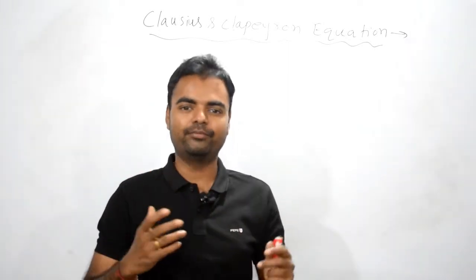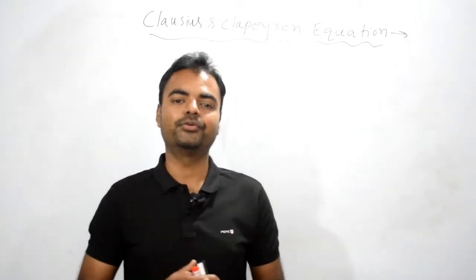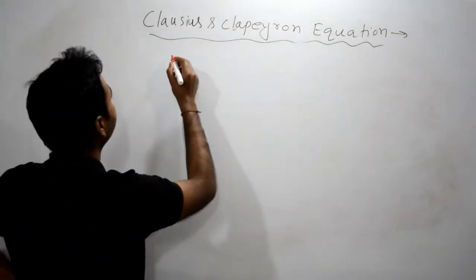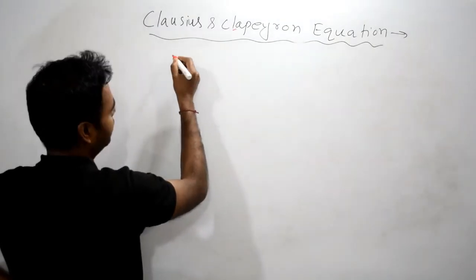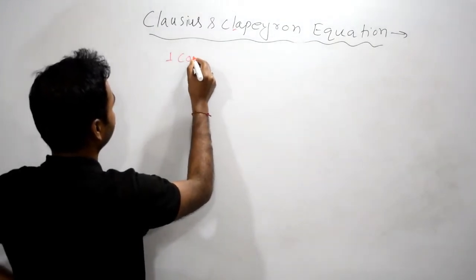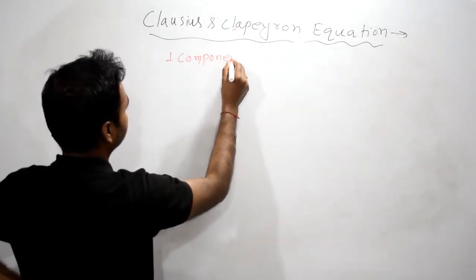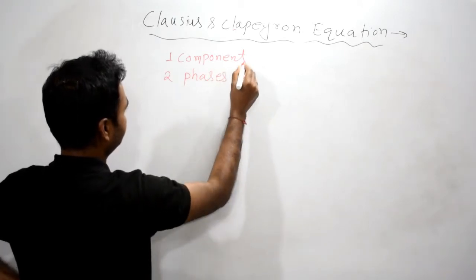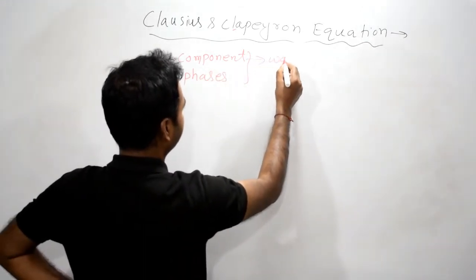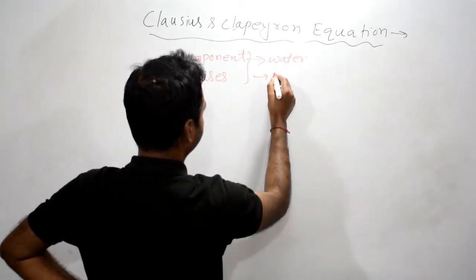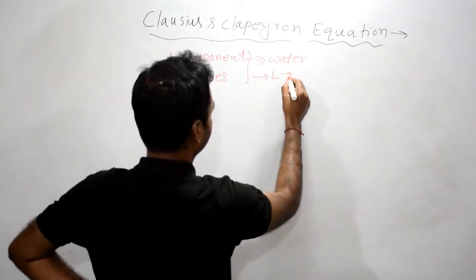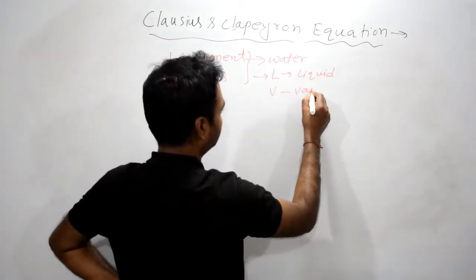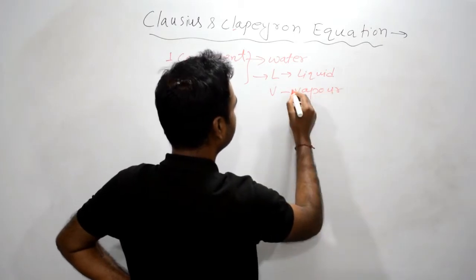Let's get started. In this case we are going to consider one component and two phases. We are considering the component as water and two phases as liquid (alpha) and V for vapor. For water we're considering two phases which is important for deriving the equation.